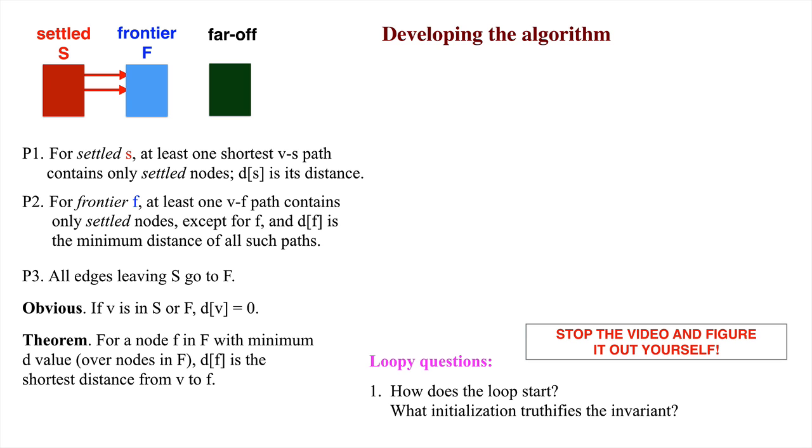Here's what we do. Fix the frontier set to contain only start node v and set d sub v to 0. Now p2 is true.